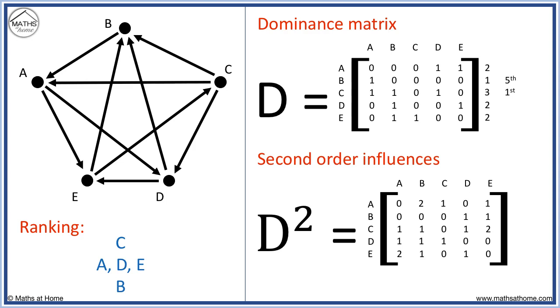For example, this 1 means there is one player who A beat, who then beat C. This is because the 1 is in player A's row, below the C. This refers to A beating E, who then beat C.